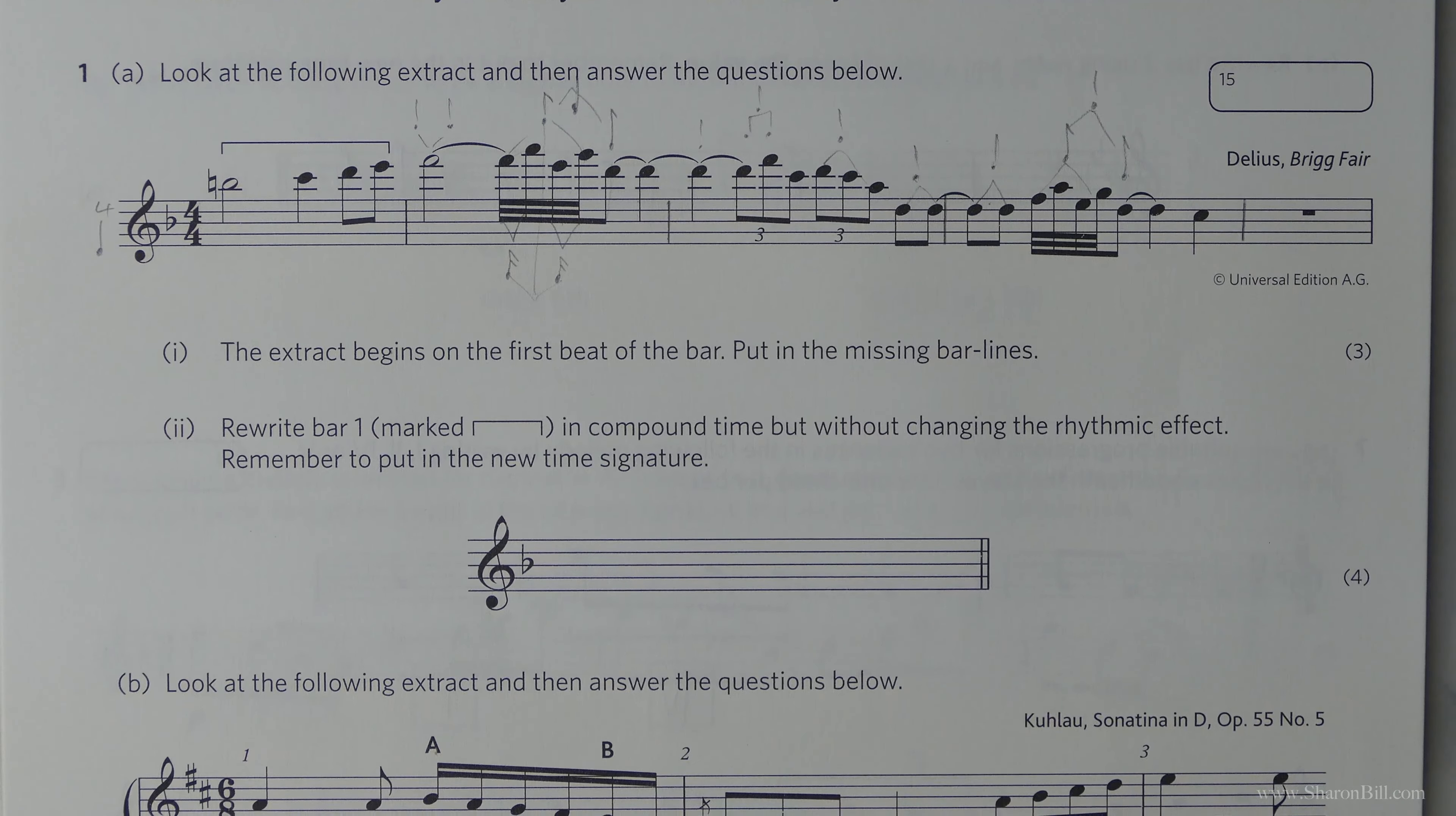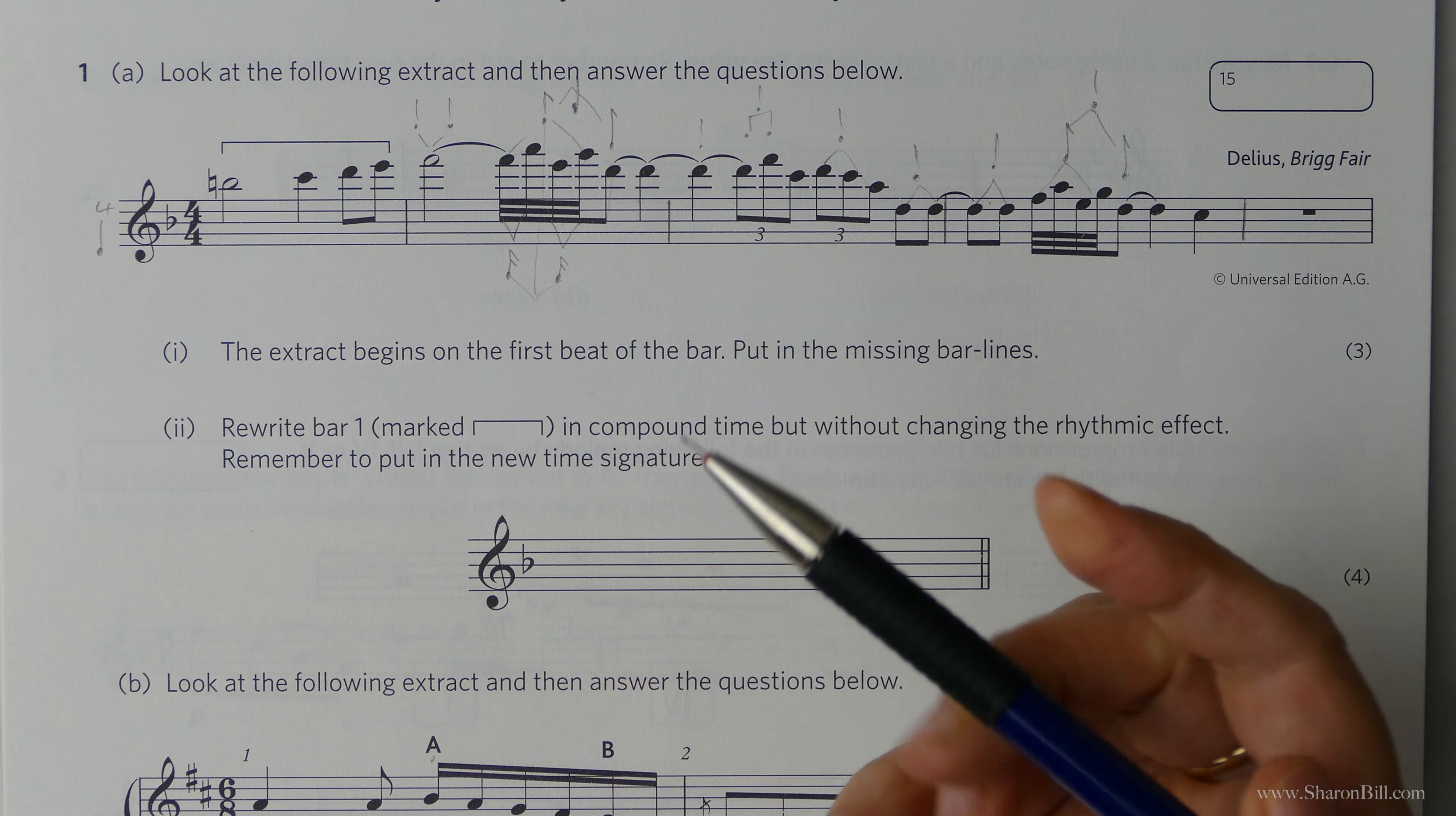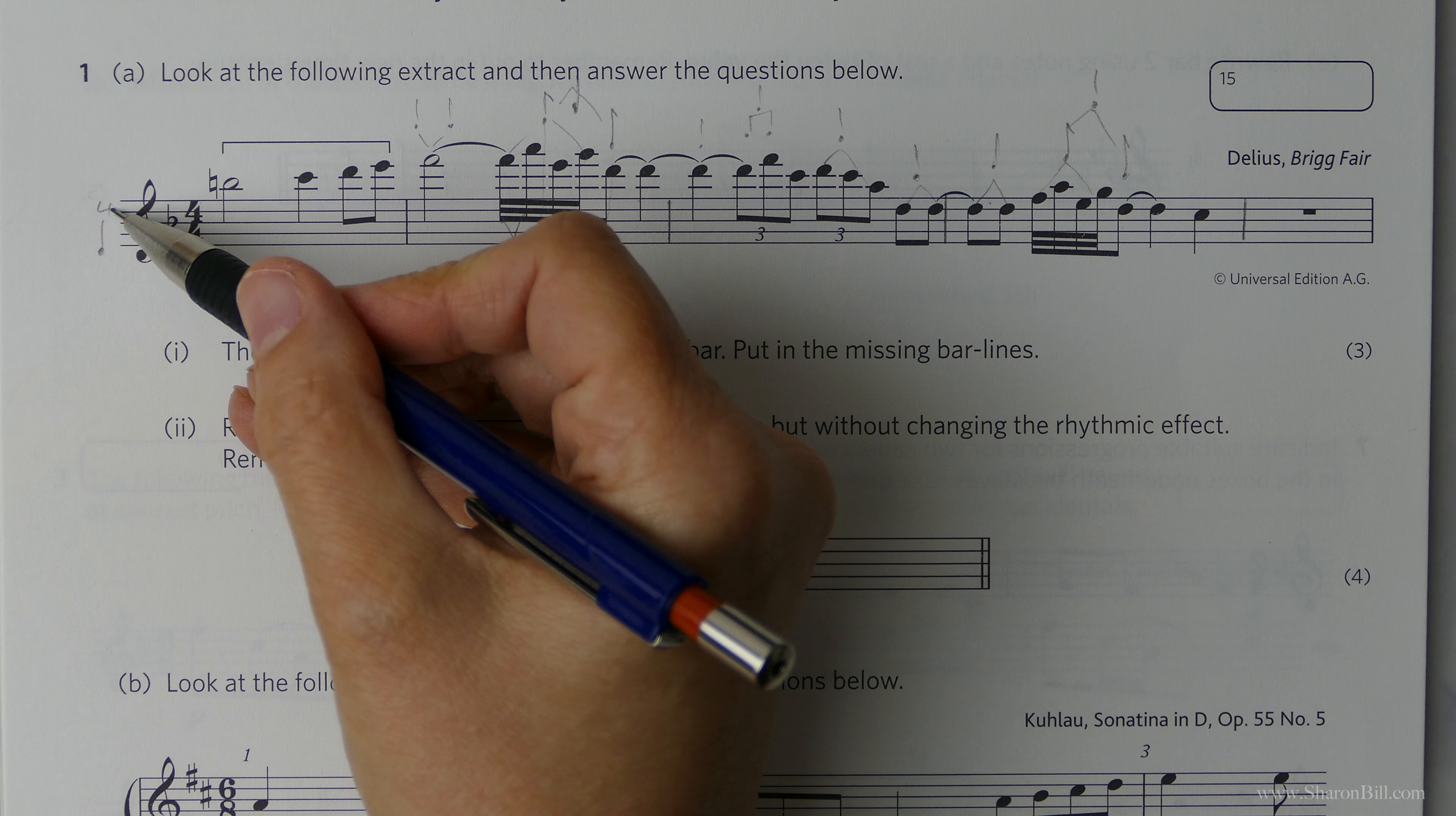Now then, the second part of this question is to rewrite bar 1 marked with this bracket here. But we need to change it into compound time, but without changing the rhythmic effect. So then we've got to change the time signature to reflect that. At the moment, we've got 4 beats in a bar.